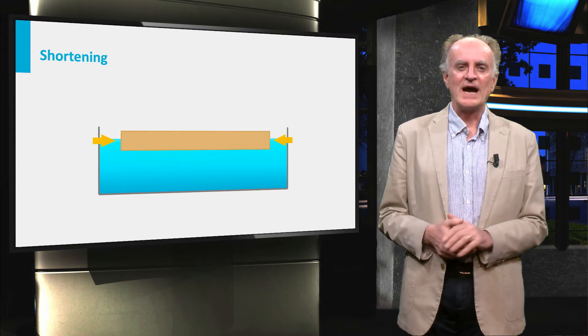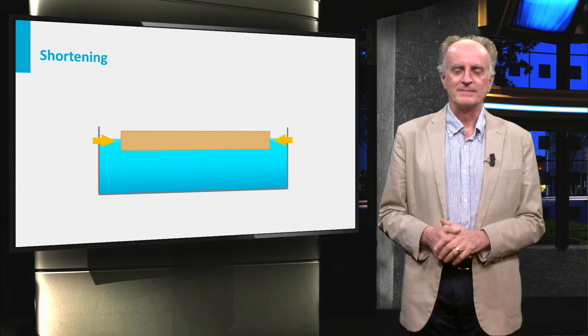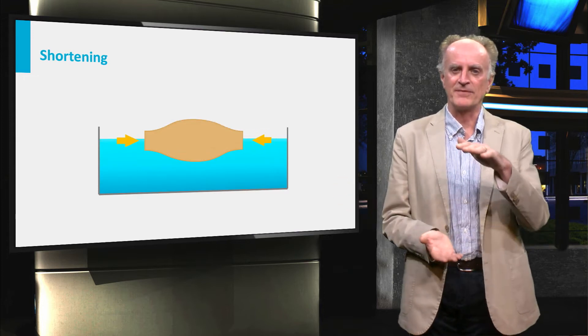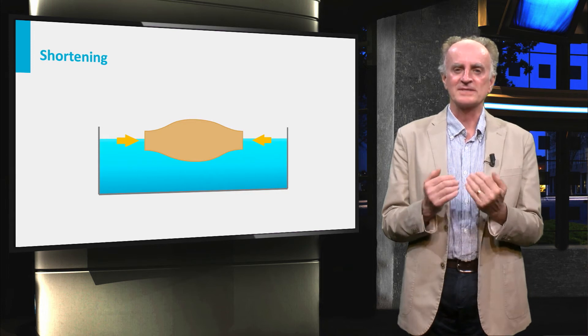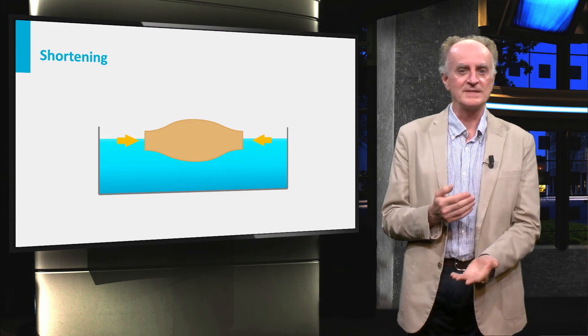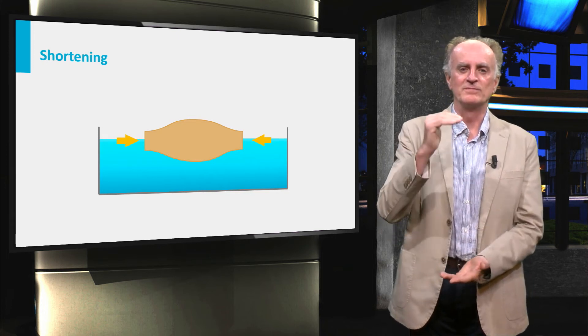We know by now how we can get these mountains. By shortening, the crust becomes thicker and to reach isostatic equilibrium the moho deepens and the surface of the earth moves upward.